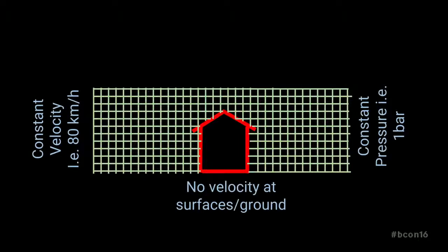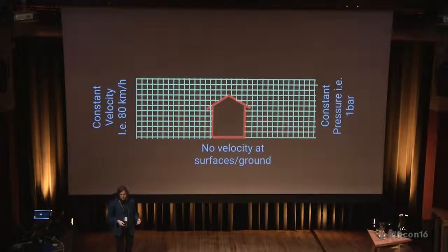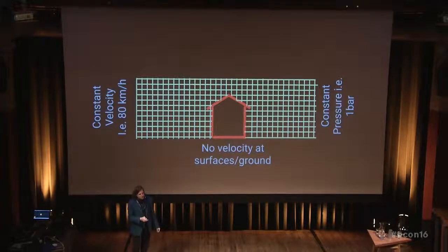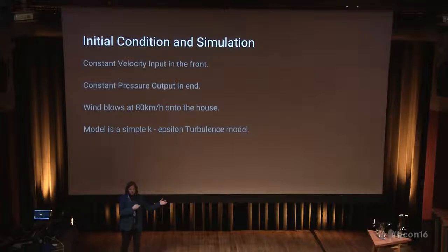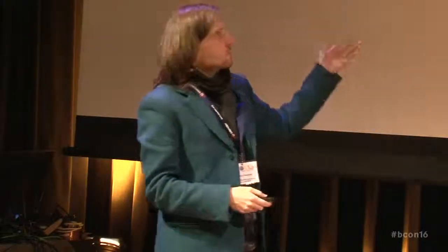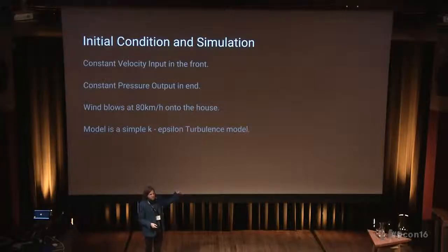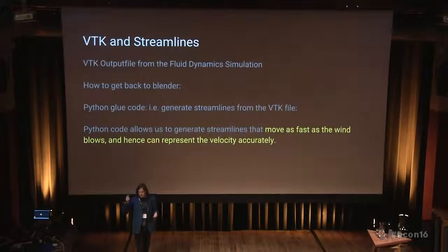This is the initial conditions: we have a quite windy night, blowing at 80 kilometers per hour, and I want to see what happens to this house. The setup is actually a tunnel — the top of the tunnel is very high above the roof so the tunnel ceiling doesn't affect the simulation. At the end of the tunnel there is constant pressure, which sucks the air out on the other side as the wind comes in. We have constant velocity on input and similar conditions. You also have to define the simulation model — here a simple k-epsilon model — which are the differential equations I want to solve on this grid.